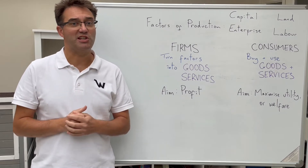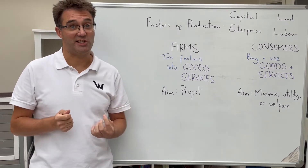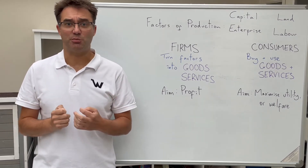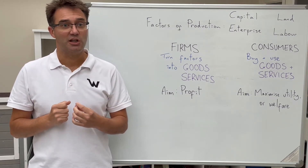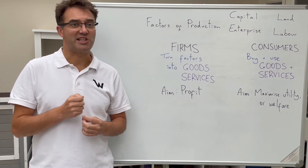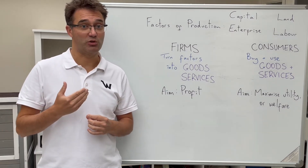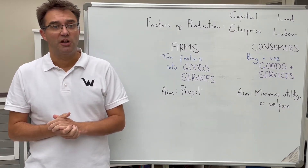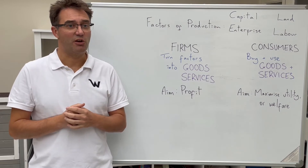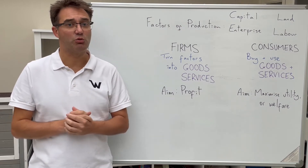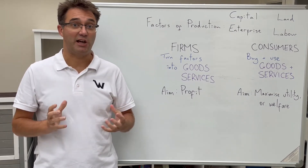We call what is produced in the economy goods and services. Goods are tangible products — they can be seen and touched. Services are intangible or invisible, where someone is doing something for someone else. The economy has three main groups of participants, each of which is assumed to have different aims.